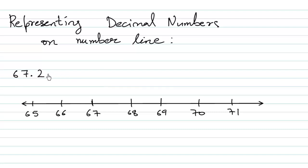67.2. So we know that 67.2 lies in between 67 and 68. So what we are going to do is we are going to divide the number line from 67 to 68 in 10 equal parts.